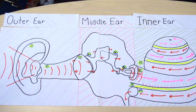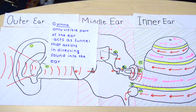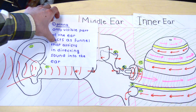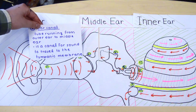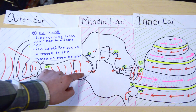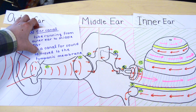First of all, the pinna, which is the only visible part of the ear, acts as a funnel that assists in directing the sound into the ear. The sound waves enter the ear canal, which is a tube running from the outer ear to the middle ear, and it's a canal for sound to travel to the tympanic membrane.